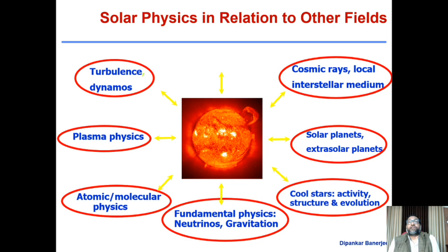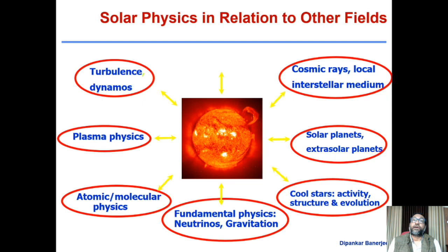Similarly, there are several branches of atomic and molecular physics — different transitions of elements and how different spectral lines are formed — all of which can be studied in the context of the sun. There are also famous discoveries in particle physics, including the neutrino problem. It was believed neutrinos have no mass, but through experiments related to the sun it was found that neutrinos can have different flavors. Famous gravitation experiments were performed during total solar eclipses, allowing verification of Einstein's theories.